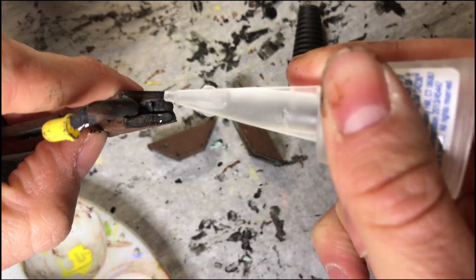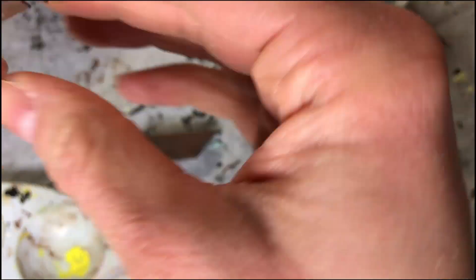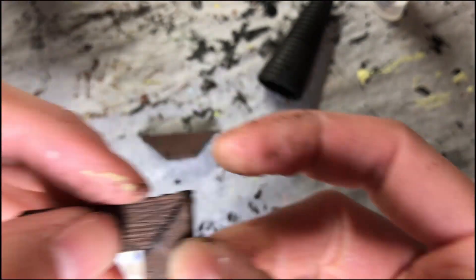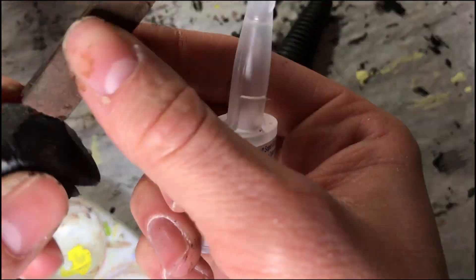And so I ended up just super gluing it together. The Mod Podge protected the foam from the super glue, so it didn't melt, which was good.